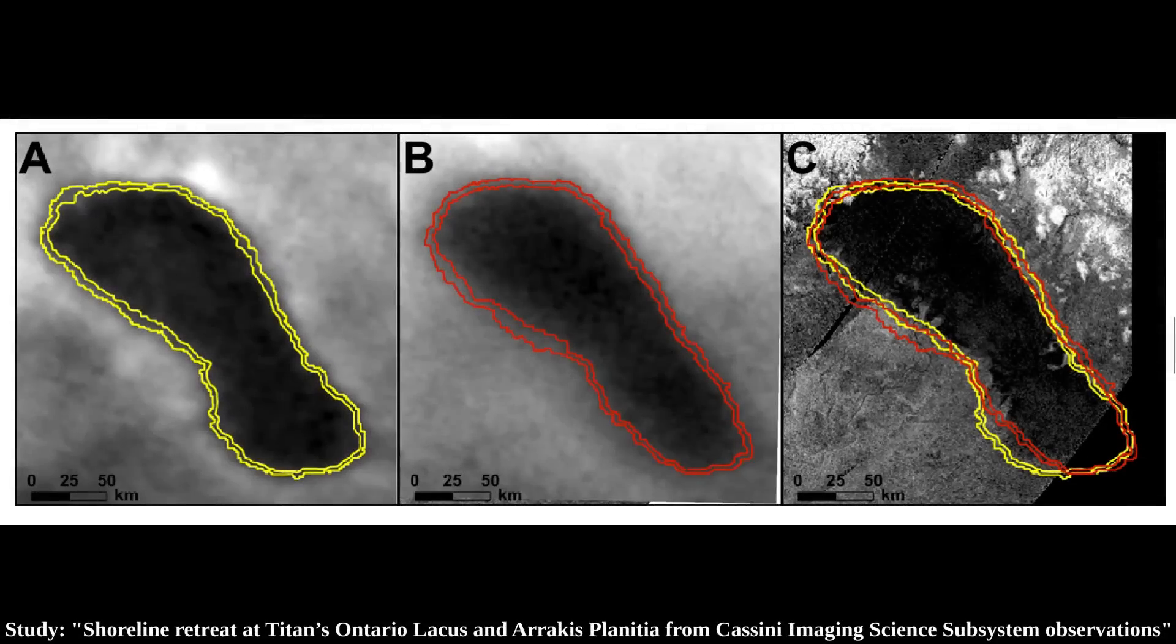Between 2005 and 2009 photos of the Lake Ontario at the South Pole, a change in liquid levels was observed, making the shoreline recess by up to 20 km in some parts.